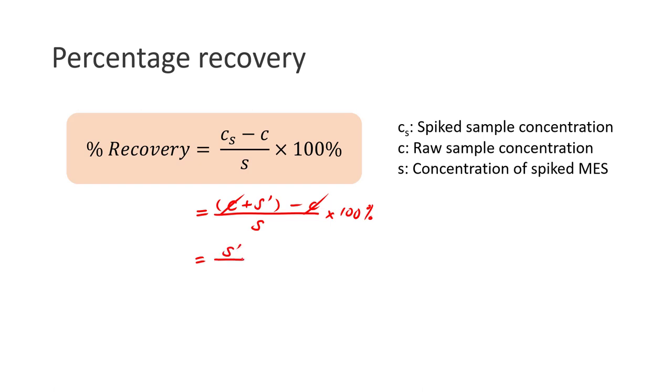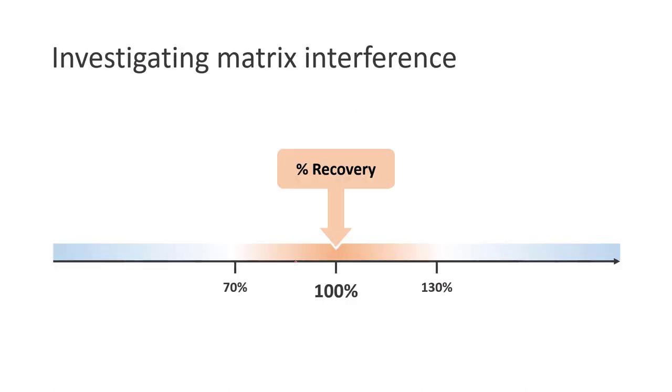Therefore, if the matrix interference is minimal, the percentage recovery should be close to 100 percent. According to the EPA protocol for the ICP-AES analysis of water samples, if the percentage recovery falls within the range of 70 percent to 130 percent, the results will be considered as acceptable.